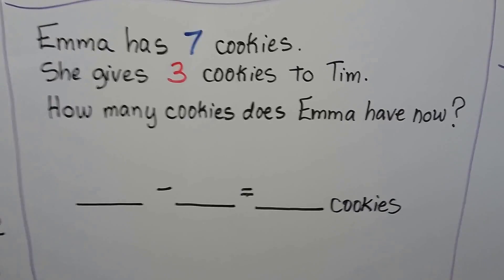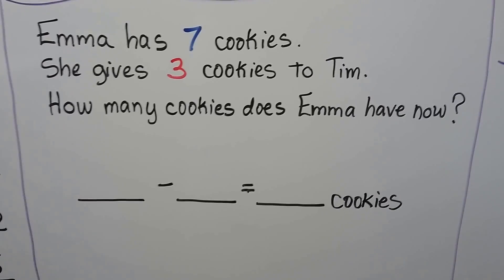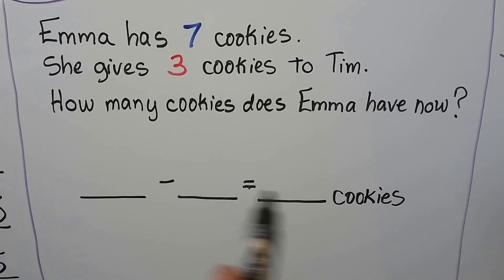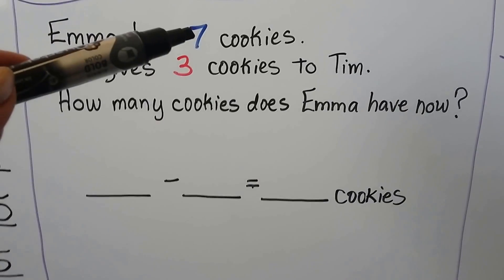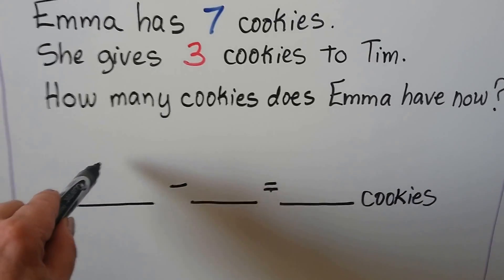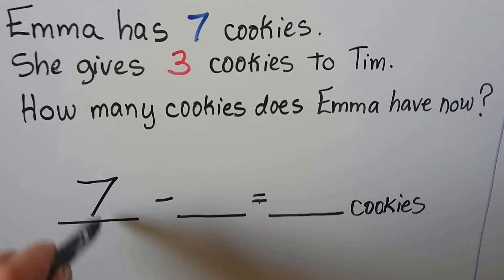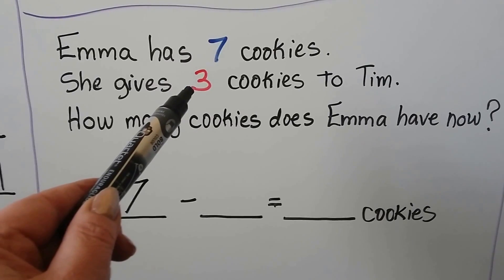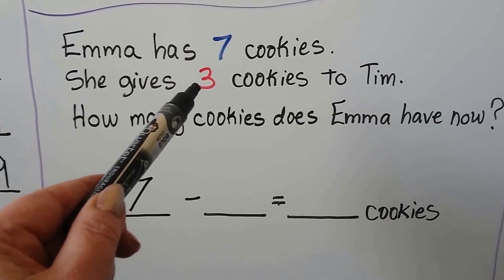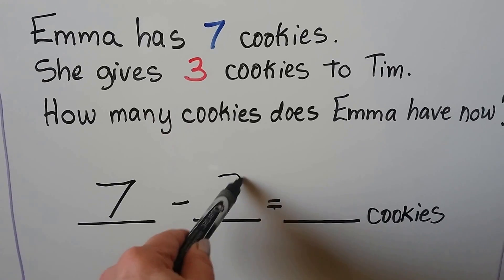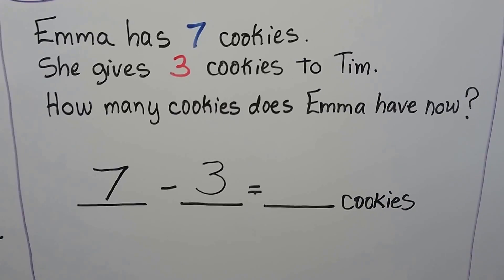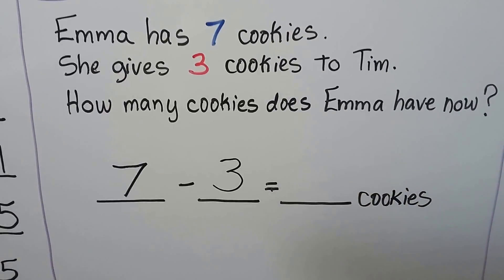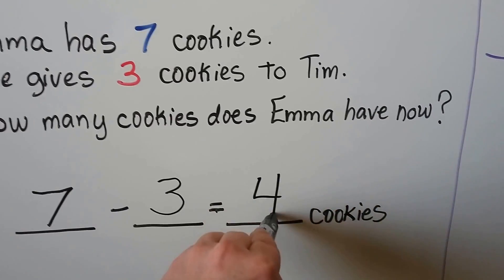Emma has 7 cookies. She gives 3 cookies to Tim. How many cookies does Emma have now? We can write a subtraction sentence for this problem. She has 7 cookies and gives 3 to Tim, so 3 cookies are being taken away. We're going to minus 3. We count back: 7, 6, 5, 4. She has 4 cookies.